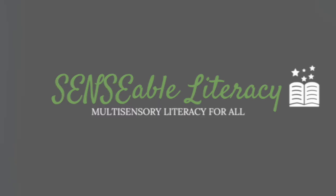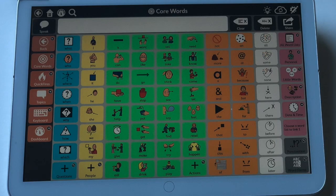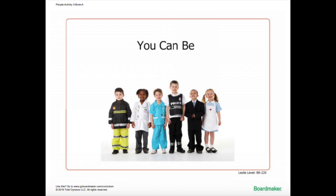This video demonstrates modeling within Snap Core First by Tobii Dynavox. The grid size within this video is 8 by 10, and the location of the symbols may change when modeled within a different grid size. This book is part of the Boardmaker Activities to Go Unit Community People, Level A. Boardmaker Activities to Go are leveled, thematic, printable, and free activities for students in grades K through 12. The link to access these activities is listed in the caption of the video.